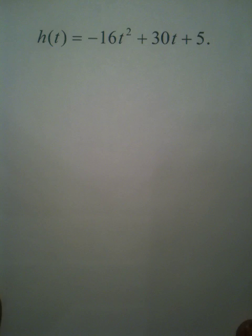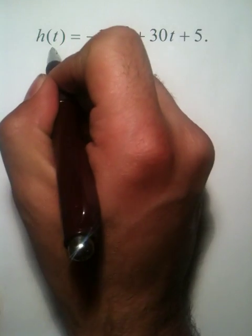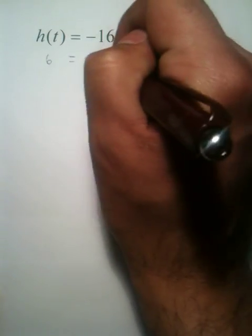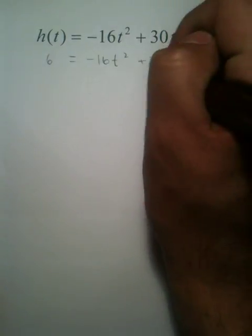So here's the function that they were giving us. The one thing that we do know is that normally this equals zero. Well, it equals six right now because the receiver is six feet above the ground.